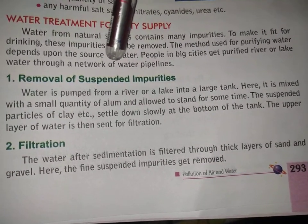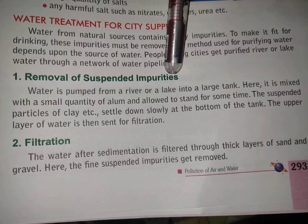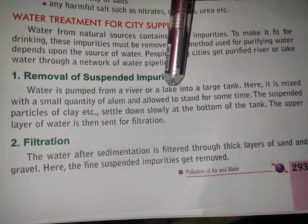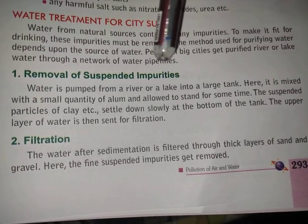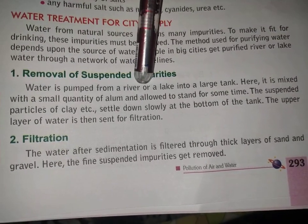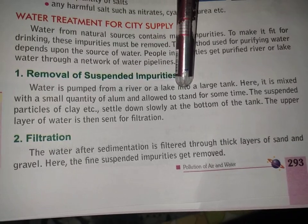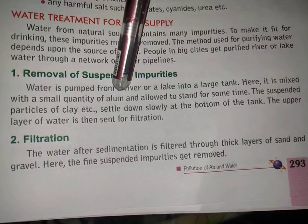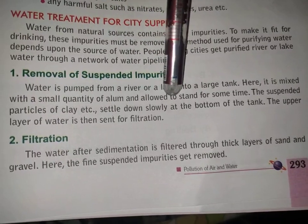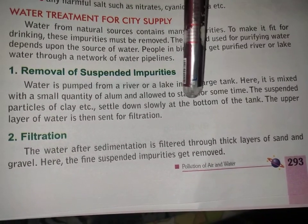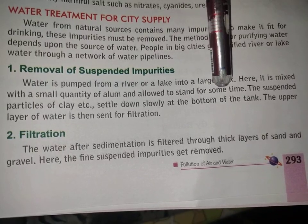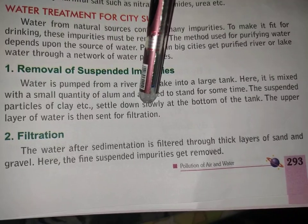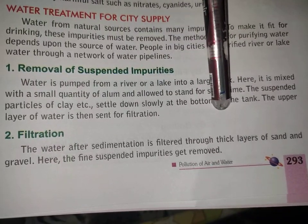The first step is removal of suspended impurities — things like stones and small particles. Water is pumped from a river or a lake into a large tank, then it is mixed with a small quantity of alum and allowed to stand for some time. The suspended particles of clay settle down slowly at the bottom of the tank.